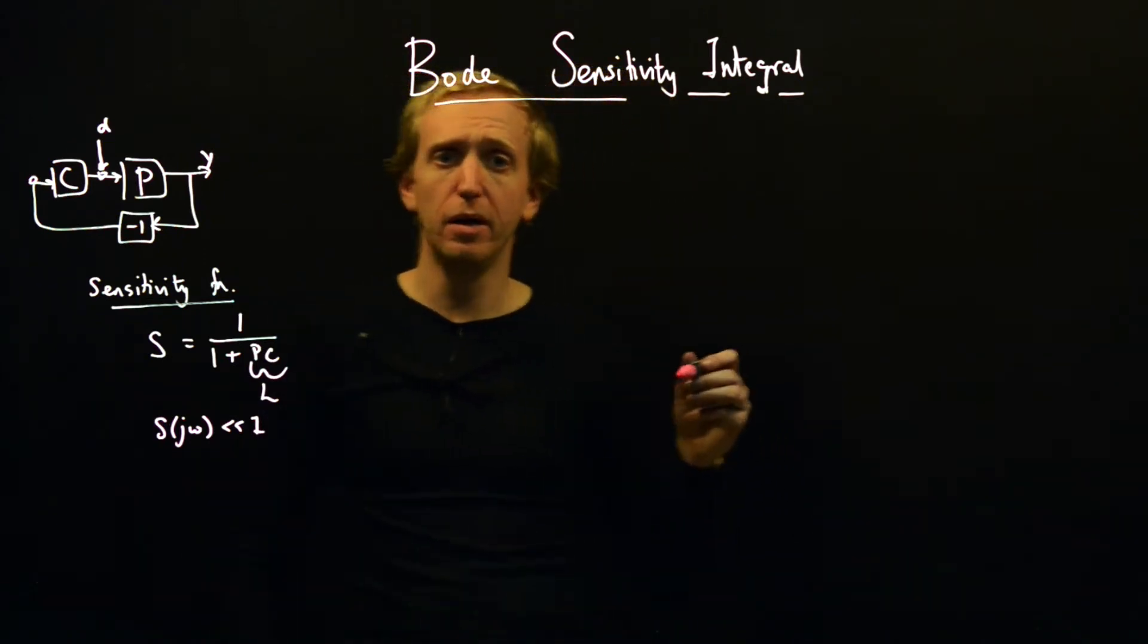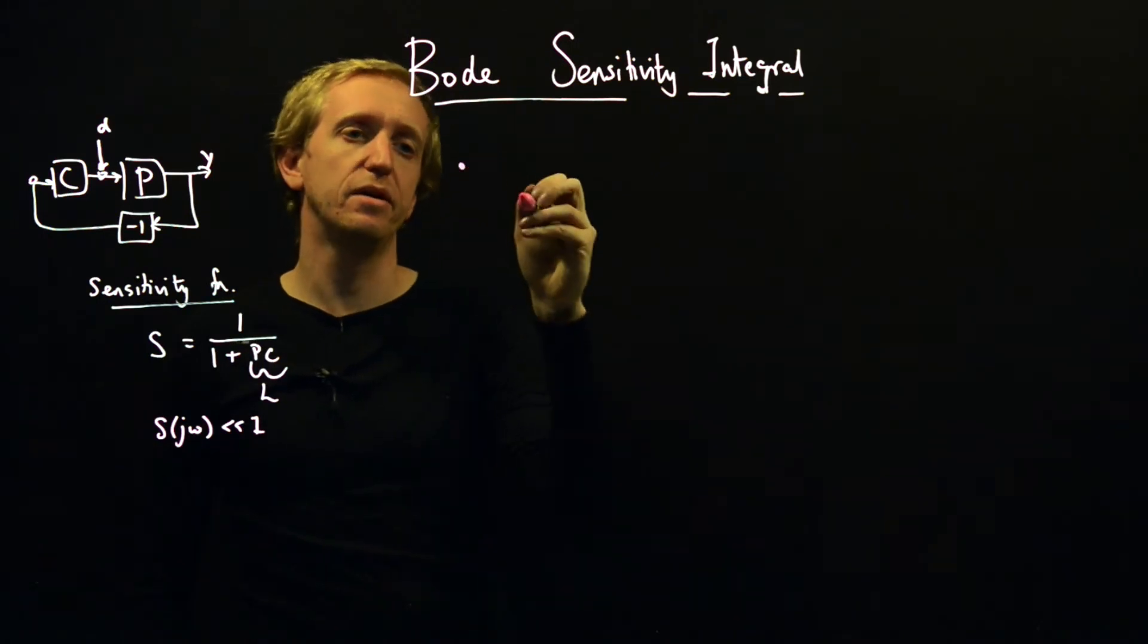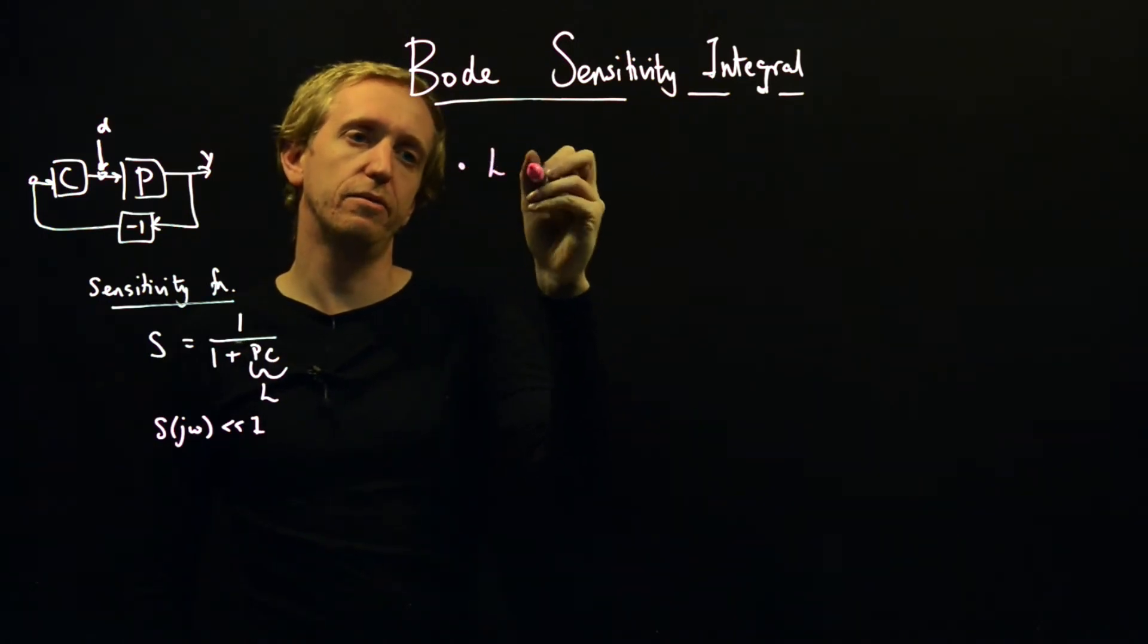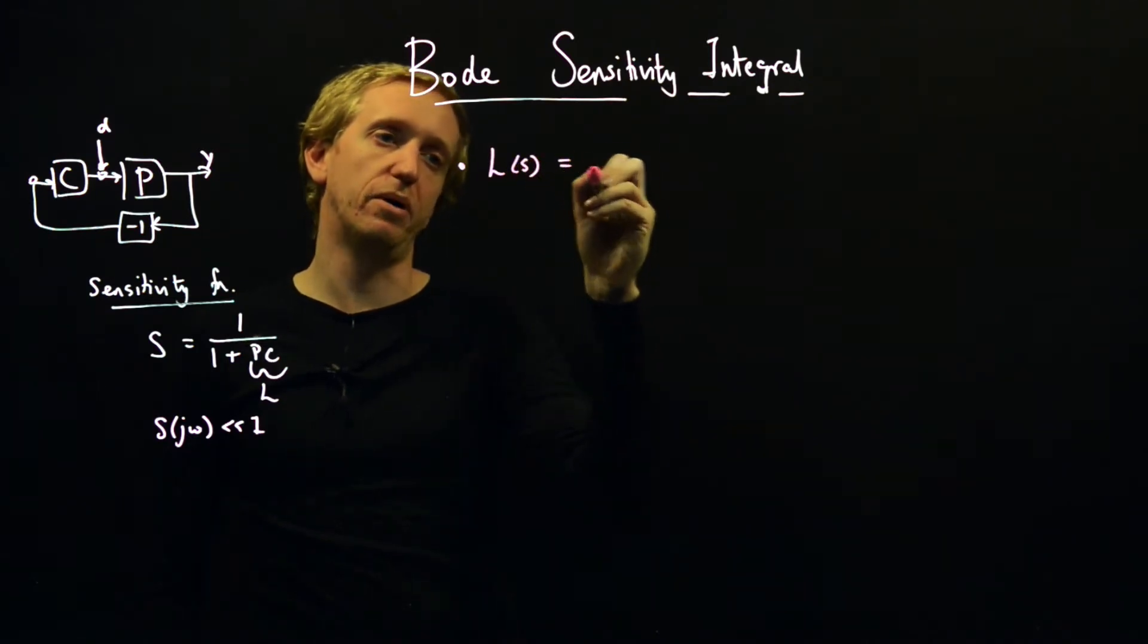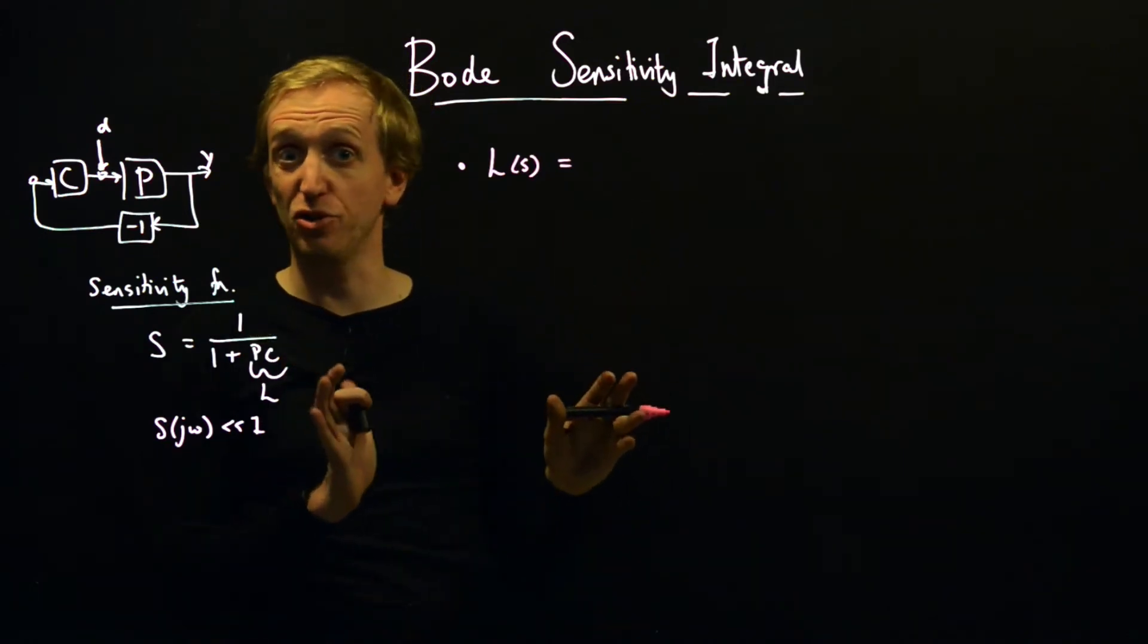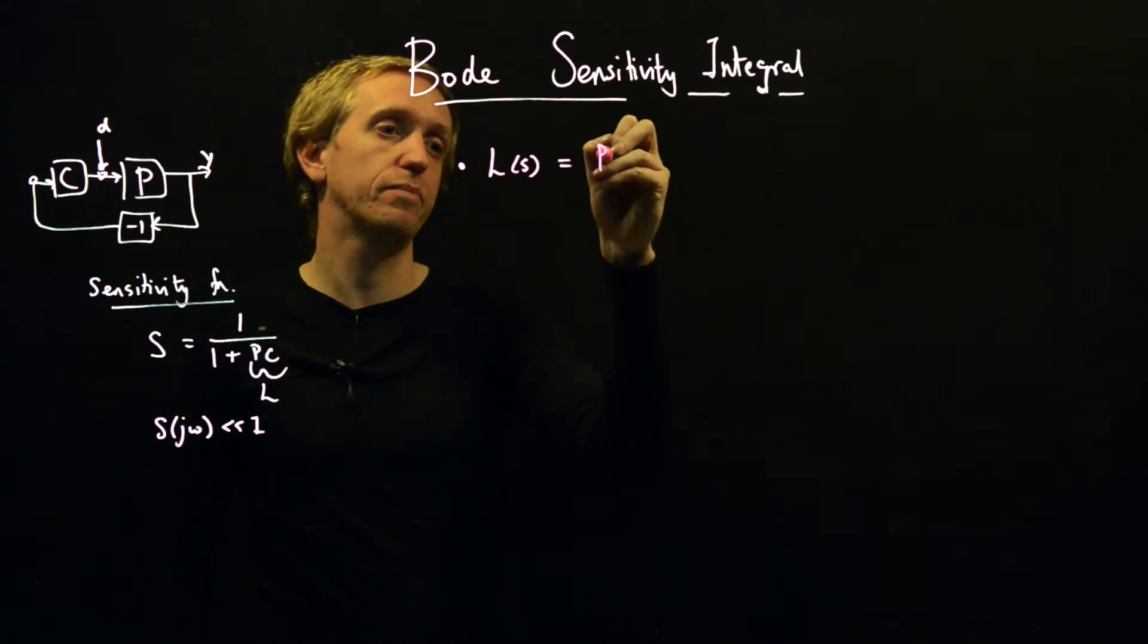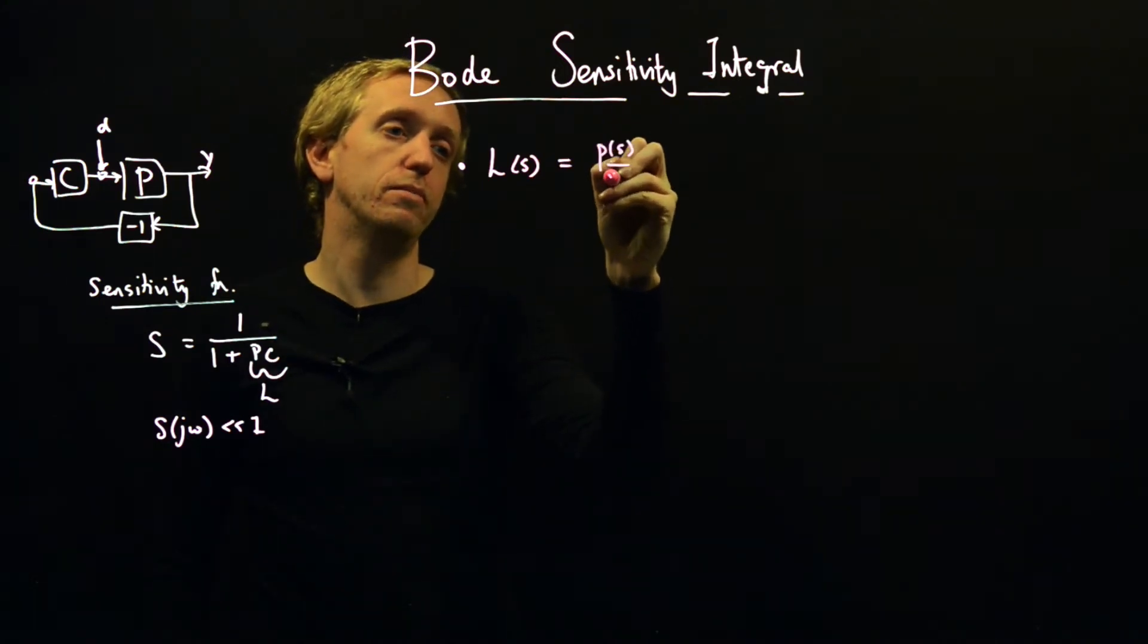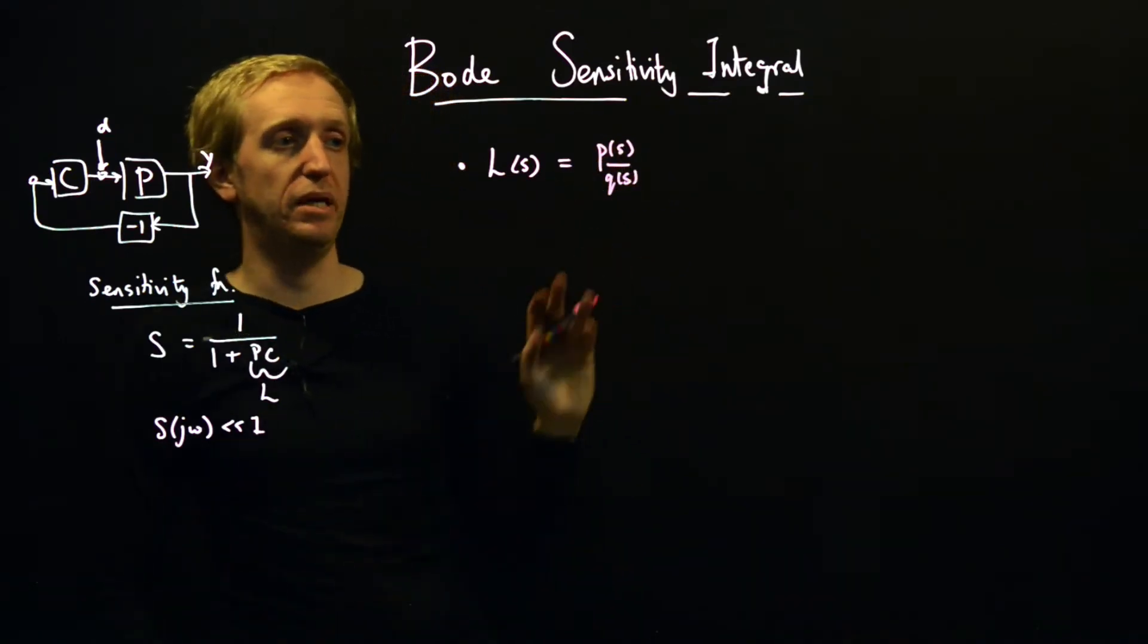And so it comes with a few caveats. L of s must be given by the ratio of two polynomials. So we're talking about these differential equation models really - so no delays.